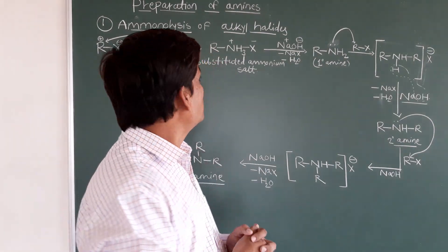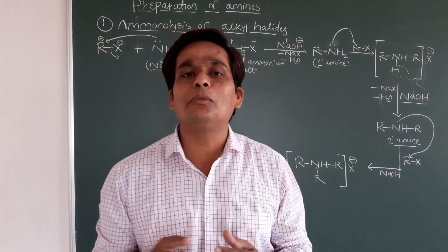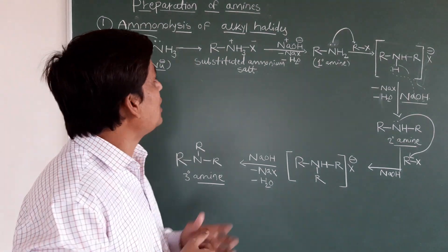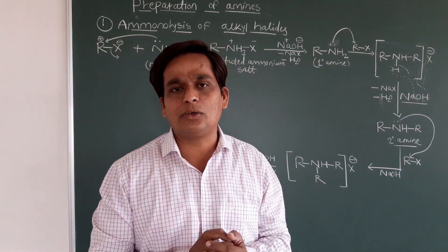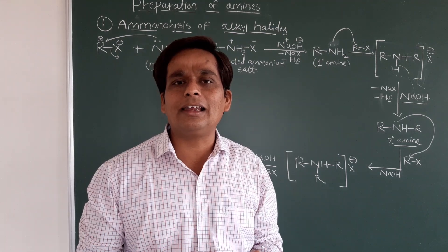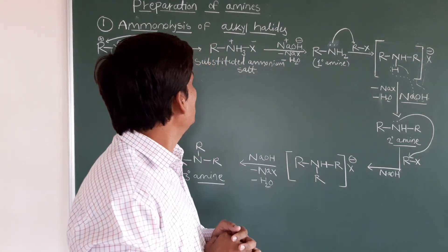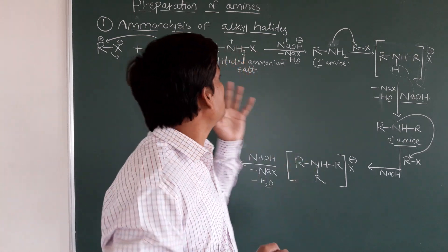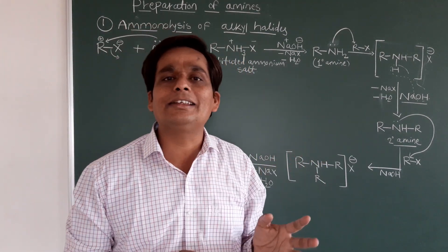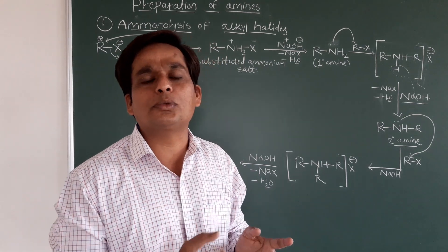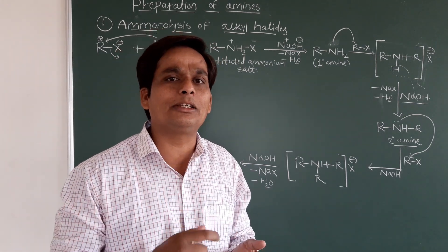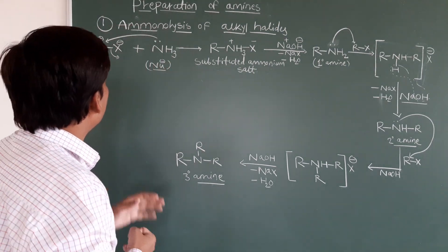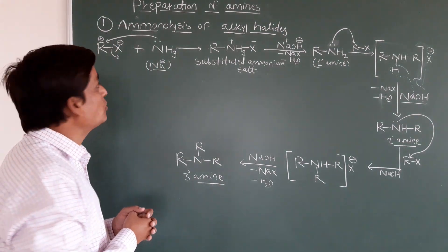In the ammonolysis process we can use ammonia. We can use alkyl halides or aryl halides, which react with an ammonia molecule. This is one type of nucleophilic substitution reaction. In this reaction, the halogen atom is replaced by the amine group. Let's see how the ammonolysis process works.